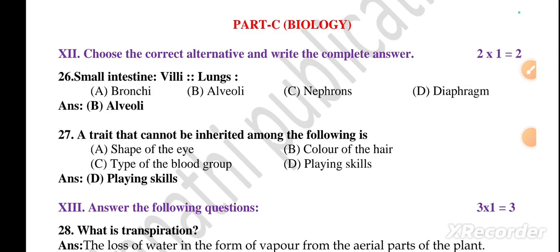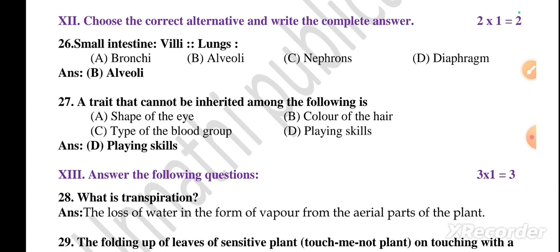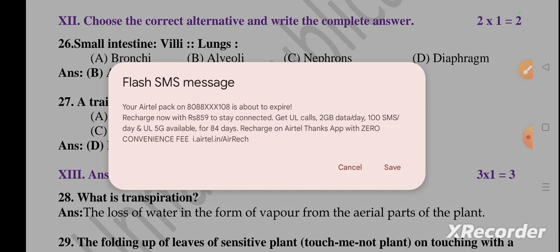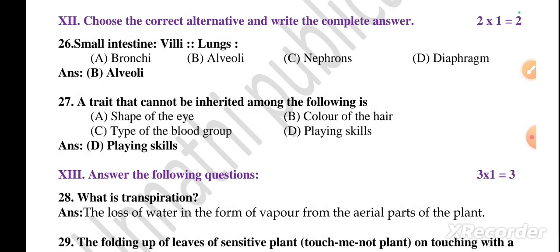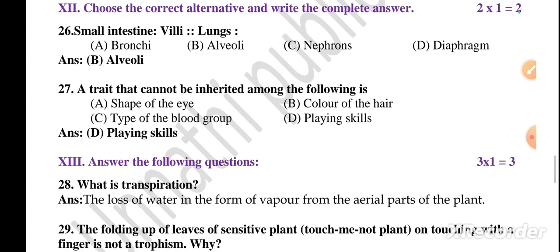Good morning. In last classes we discussed 2024-25 paper 2 — science paper 2, physics and chemistry part. Now we are going to discuss part C, that's biology. These key answers are helpful for your 2024-25 annual exam. Some questions from these definitely repeat, and whatever the very important questions are, I already discussed in last 10-year question papers, solved and added to my science English medium playlist.